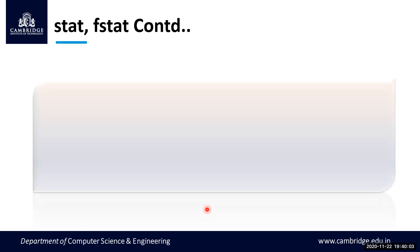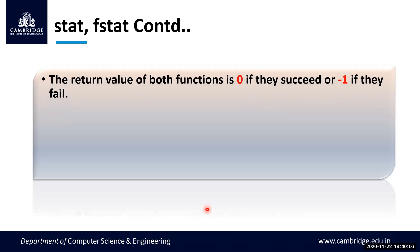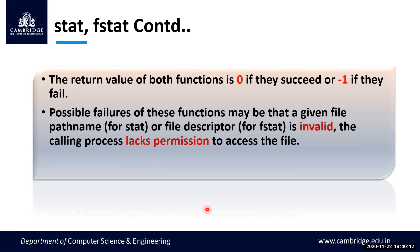The return value of both functions is zero on success, or minus one on failure. Possible failures include: an incorrect path name, an invalid file descriptor number, or insufficient access permission to access the file or view its attributes. Every file requires the appropriate permission to open and use it — if you don't have permission, the function will fail.